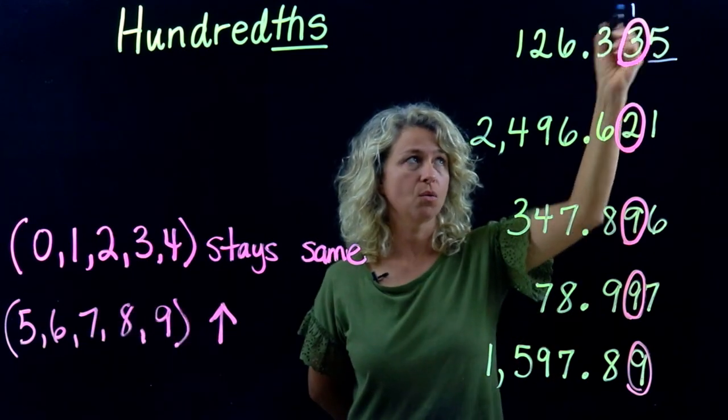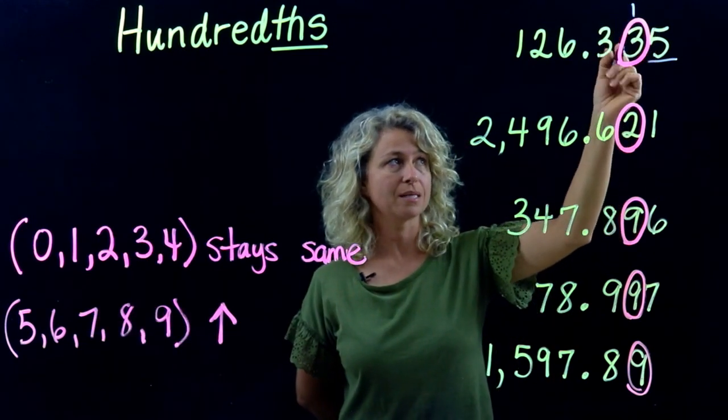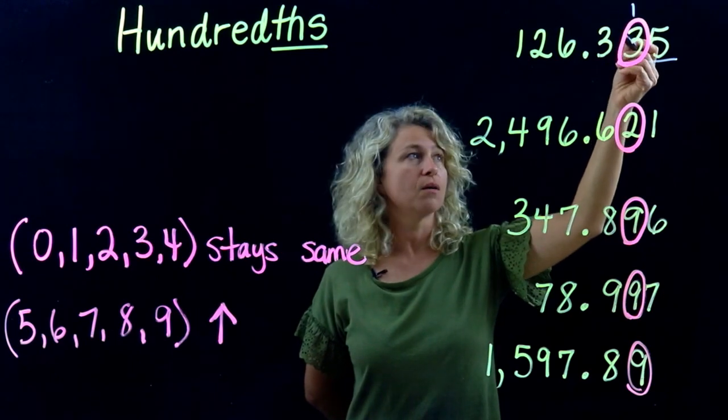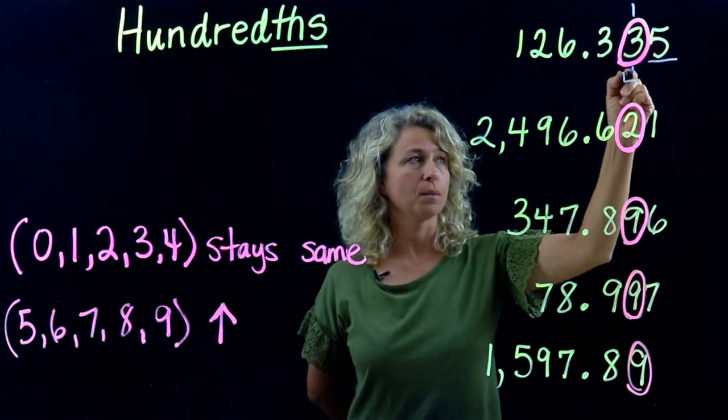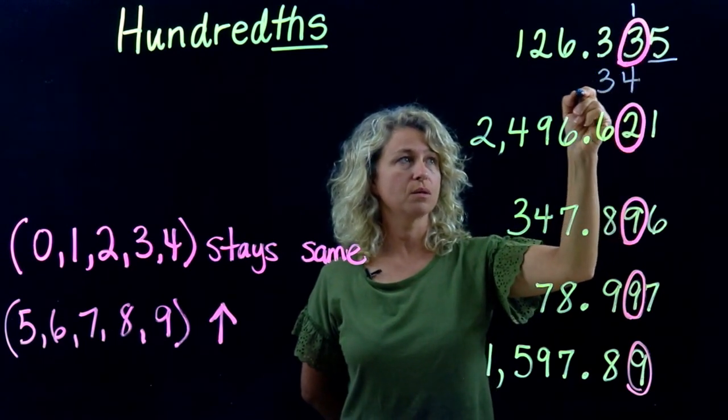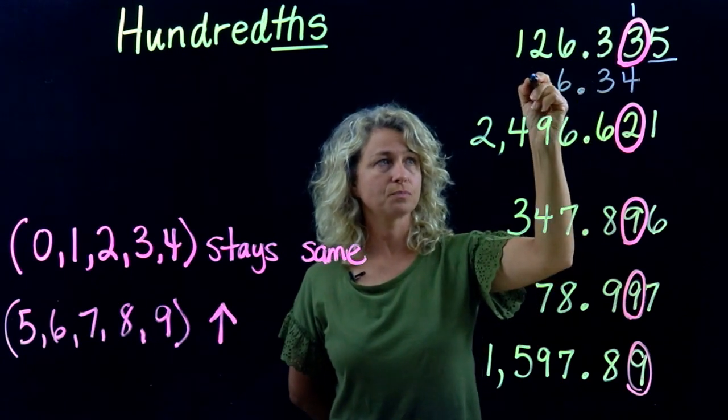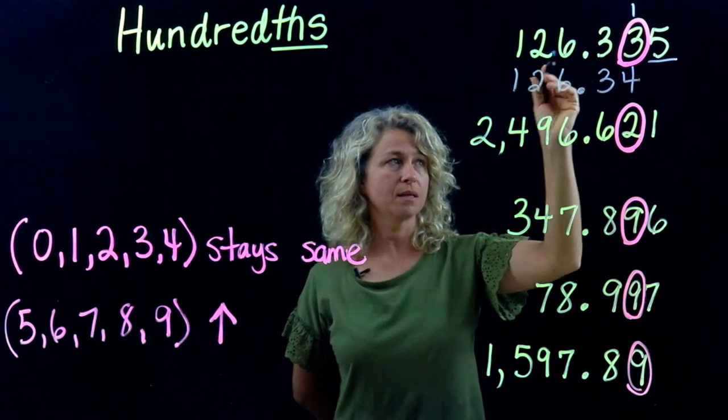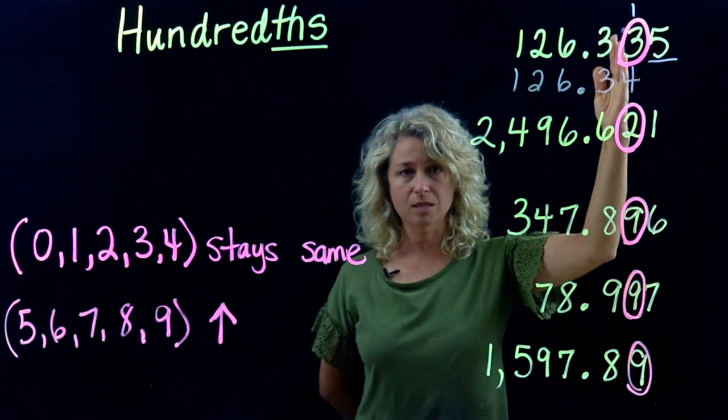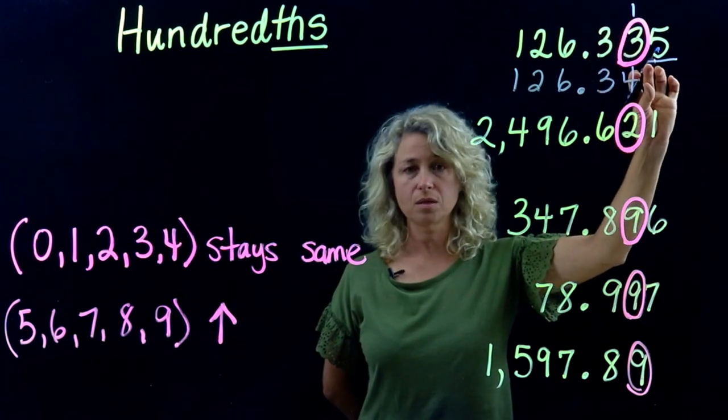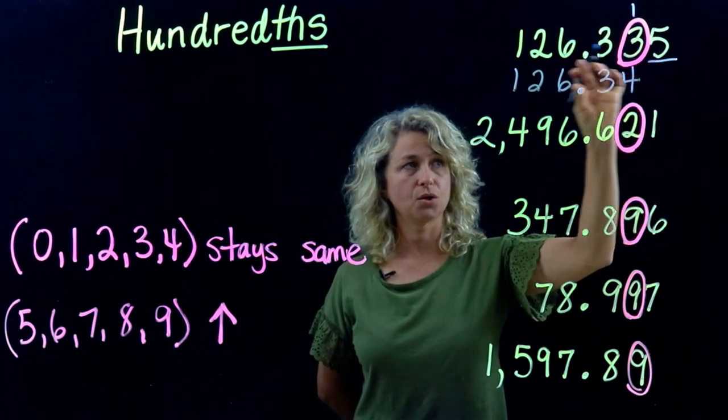So five or more, we're going to add one more to the hundredths place. Rounding up, three plus one is four. Bring your other numbers down and stop at that place value. Do not put a zero here because we're rounding to the hundredths place.